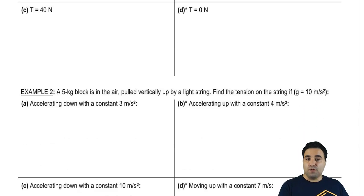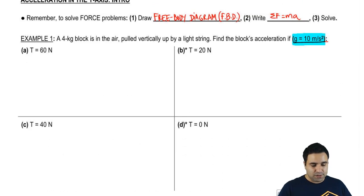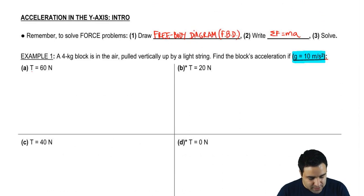I have these two four-part examples that we're going to explore here. So in this first one, I'm giving you four different tensions, and I want to know for each one of these tensions, what is the acceleration that the block would have? So it's a four kilogram object or block that's in the air, and it's pulled vertically up. So we're going to call this our tension.